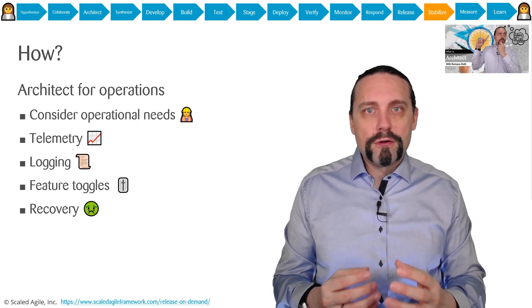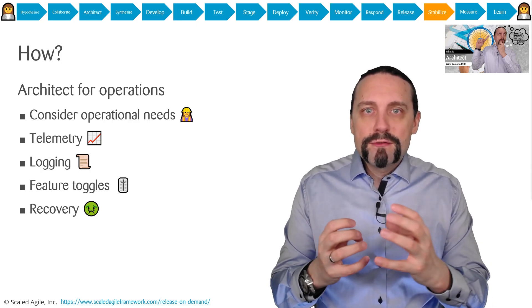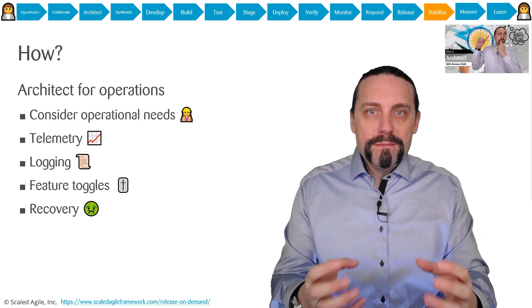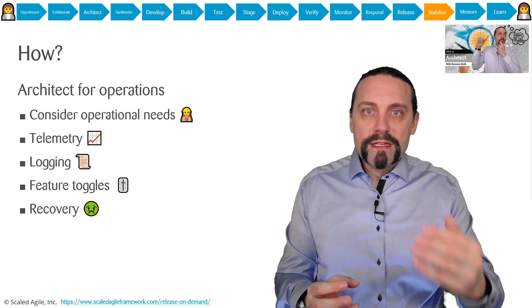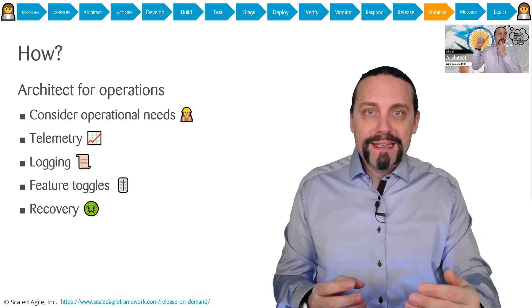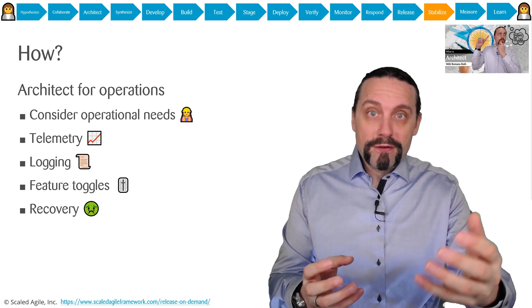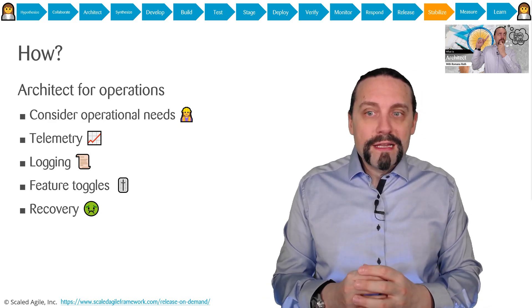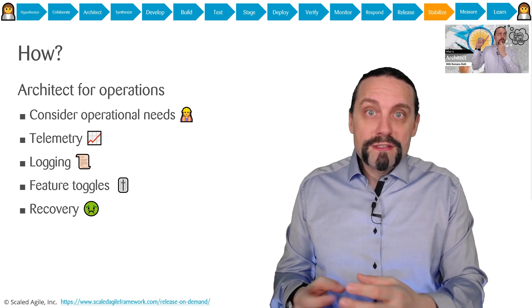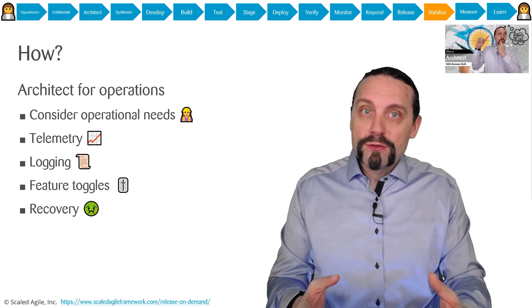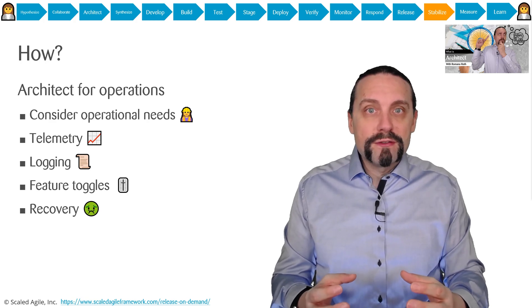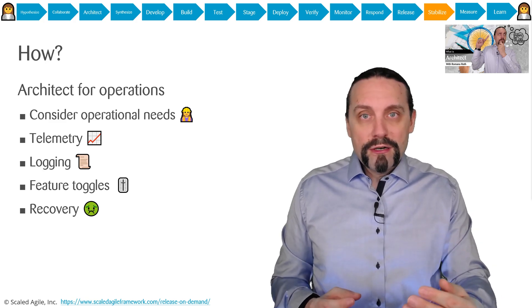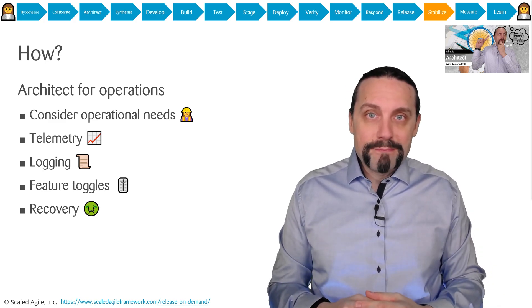When we architect for operability, we take into consideration the operational needs. We build up very good logging where we log all the data we need when we're in the stabilize activity. We also build up all the telemetry needed and have feature toggles to switch on and off certain features. And we also think about how to recover if something happens in production.